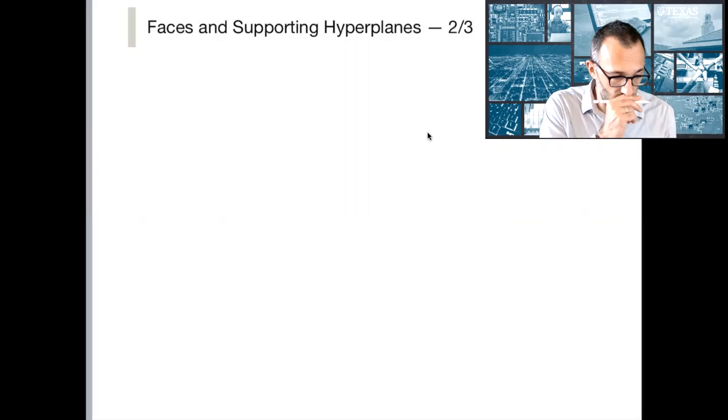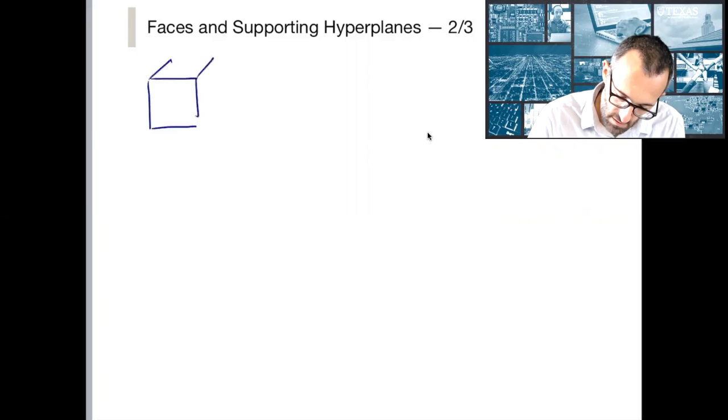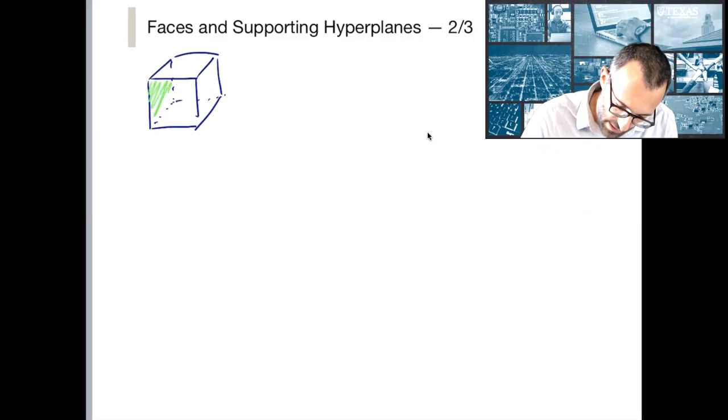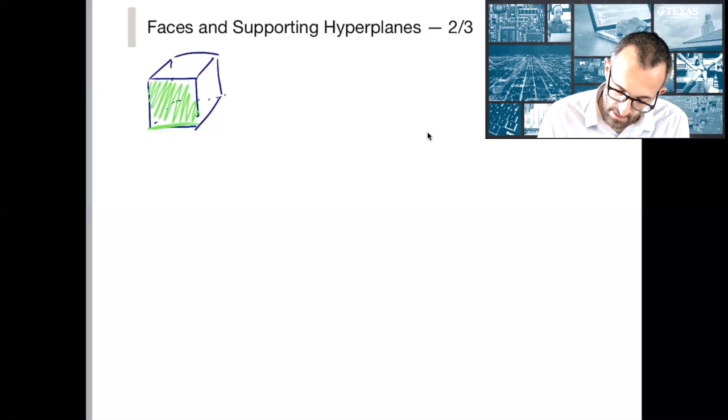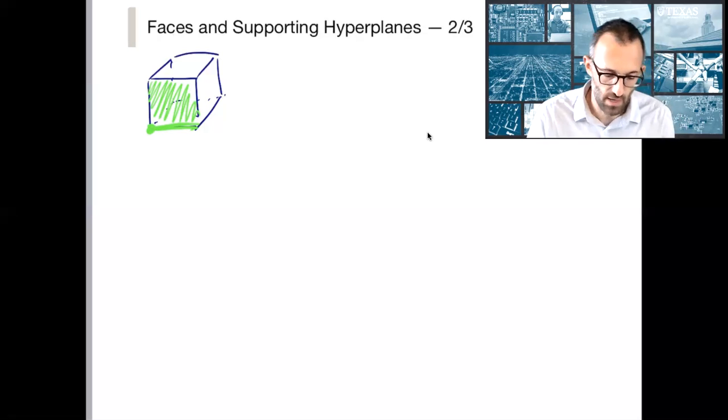So we can think about faces including each other. So if I draw an easy shape, this entire two dimensional face contains a one dimensional face, and that one dimensional face contains a zero dimensional face, which is just the vertex. So we can define a minimal face or a maximal face just by inclusion.